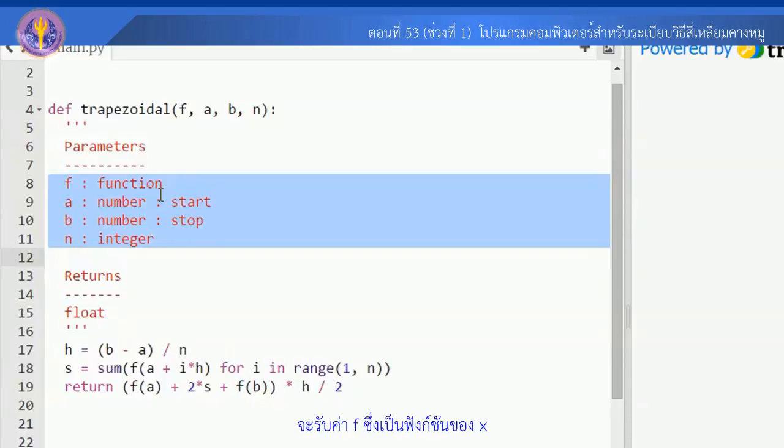f ซึ่งเป็นฟังก์ชันของ x จุด a จุด b ก็คือค่าขอบเขตด้านซ้ายและด้านขวาตามลำดับ และ input สุดท้ายก็คือ n จำนวนช่วงที่ใช้ในการพิจารณา